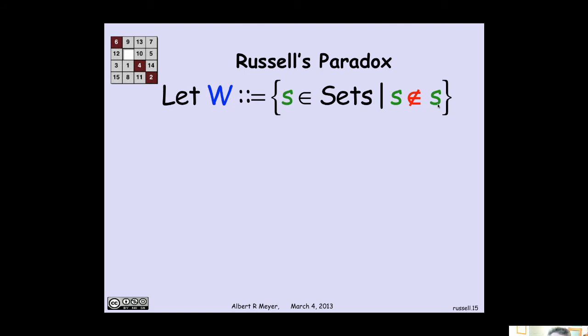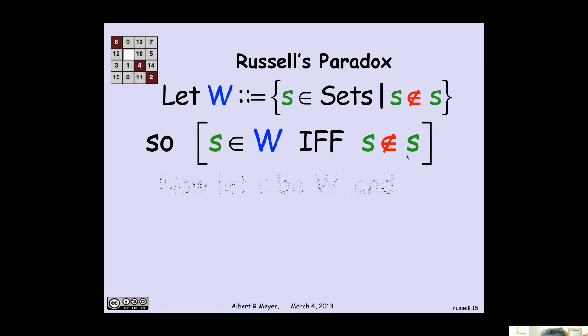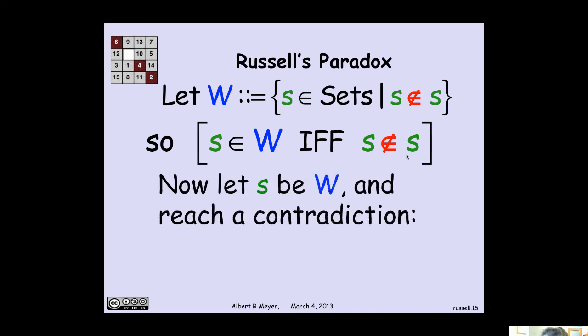The problem was that Russell came along and looked at Frege's set theory and came up with the following paradox. He defined W to be the collection of S in sets, such that S is not a member of S. Frege would certainly have said that's a well-defined set, and he will acknowledge that W is a set. And let's look at what this means. I mean, this is a diagonal argument. So let's remember, by this definition of W, what we have is that a set S is in W if and only if S is not a member of S. OK. That's fine. Then just let S be W. And we immediately get a contradiction that W is in W if and only if W is not in W.